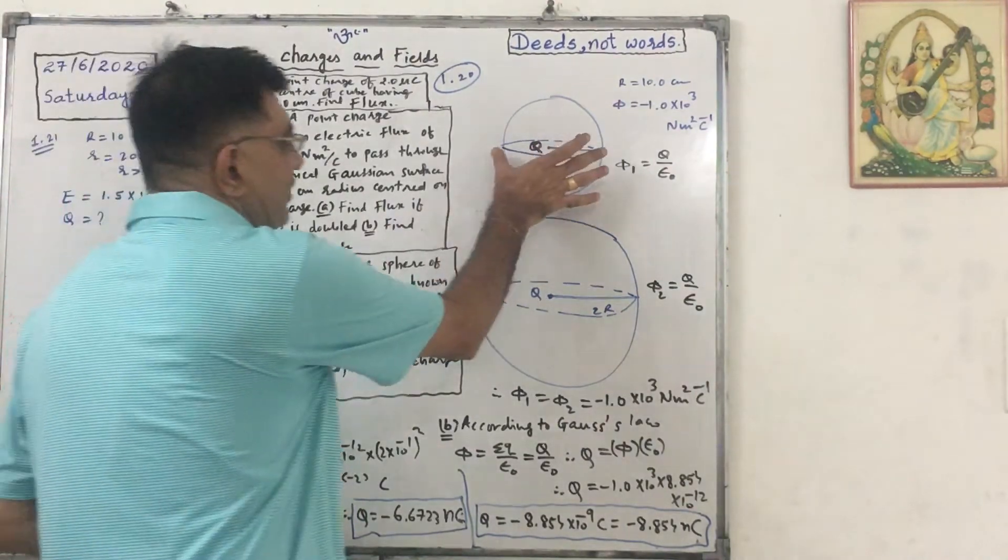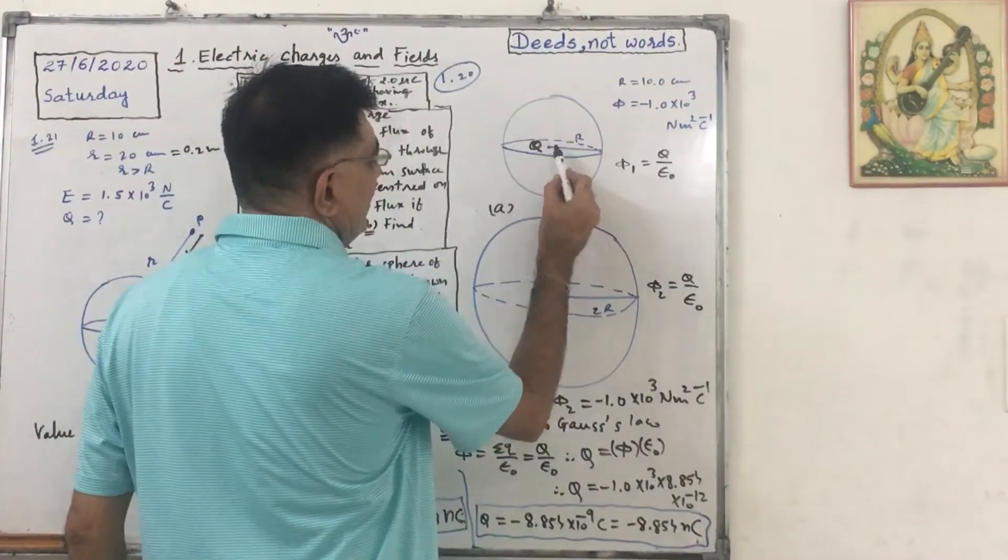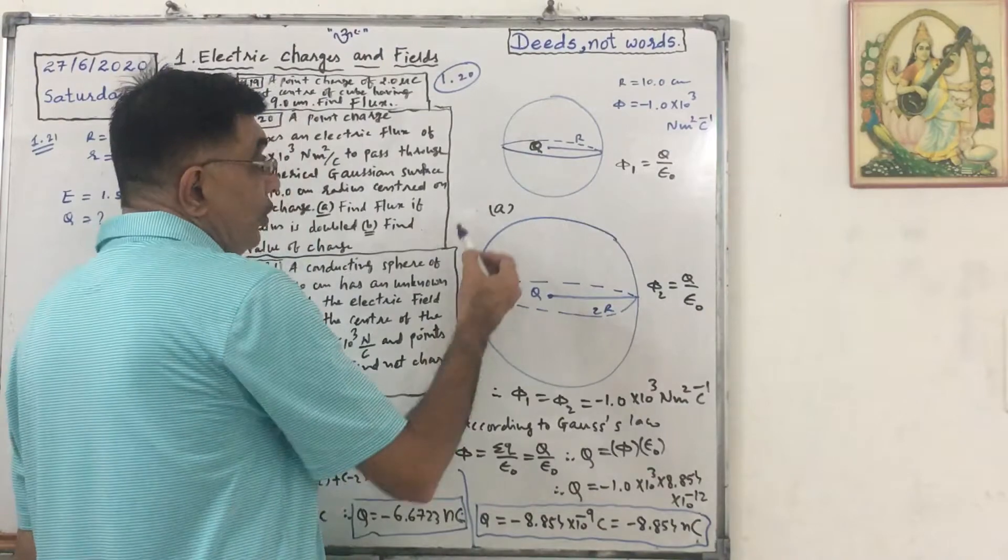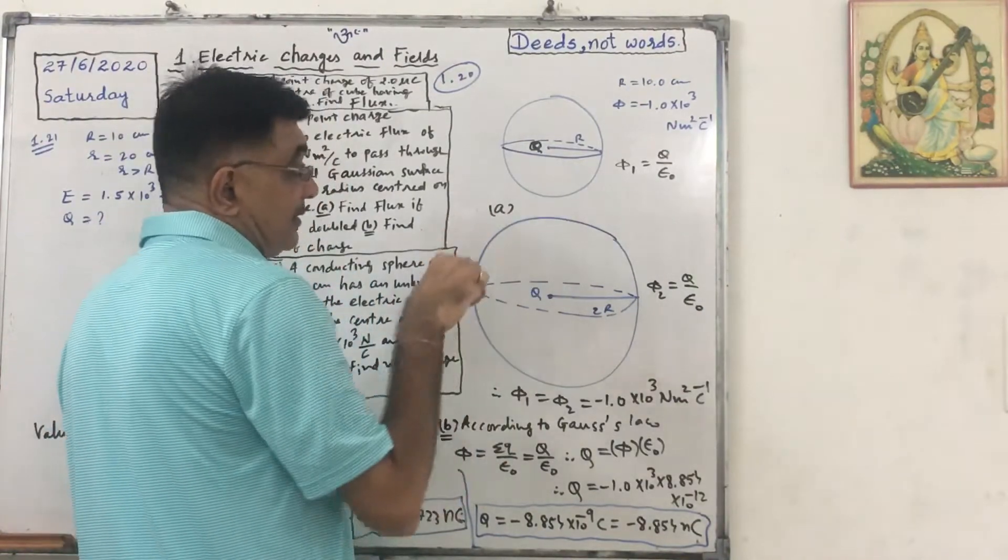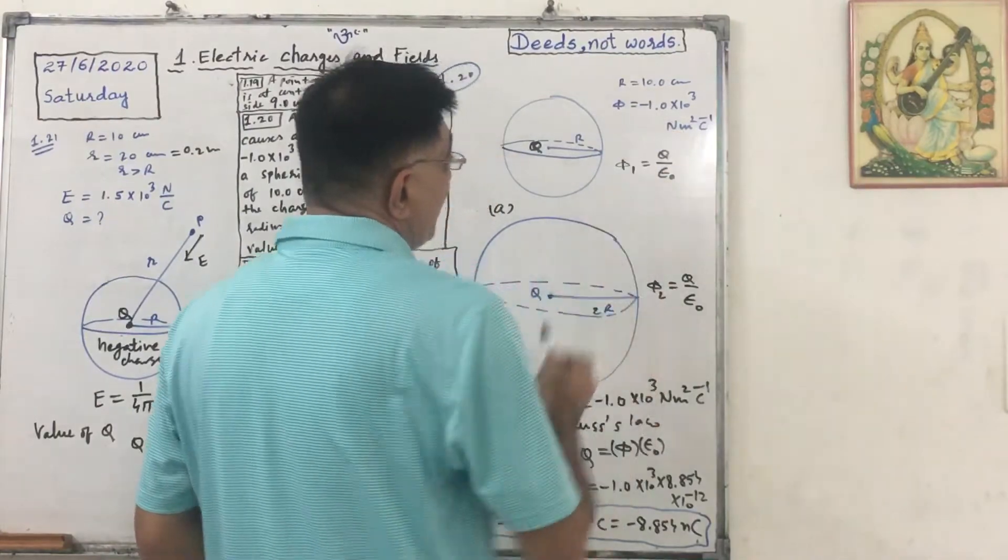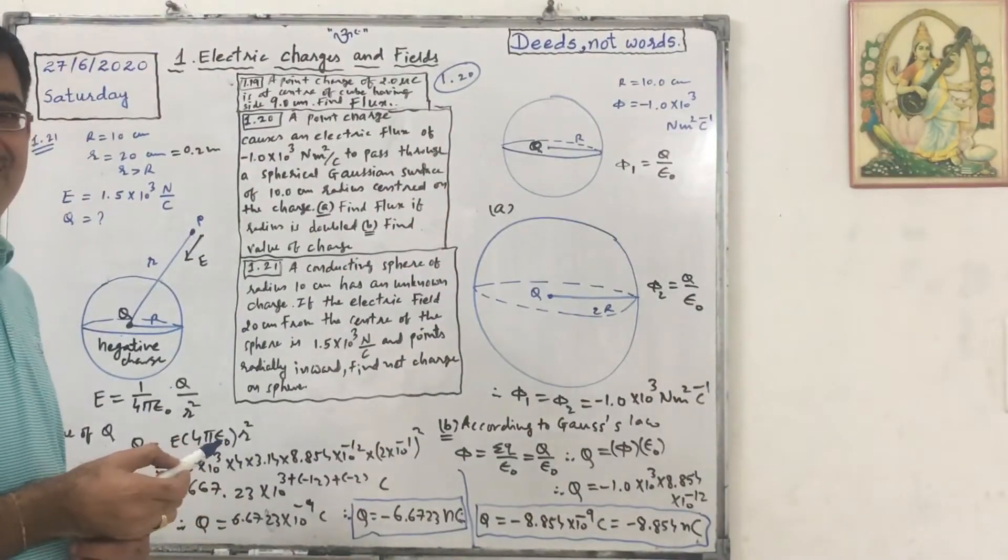Now see this is the figure. A sphere with radius 10.0 centimeter, cube is at the center of the sphere. The flux is minus 1.0 into 10 raised to 3 Newton meter square per Coulomb.